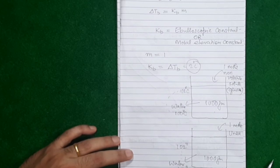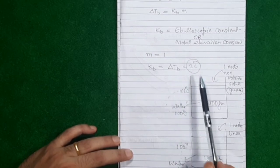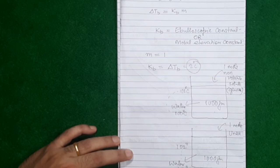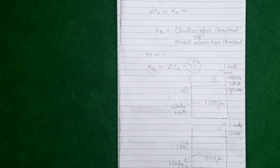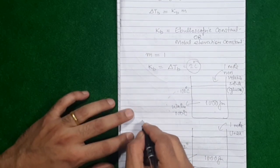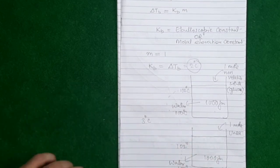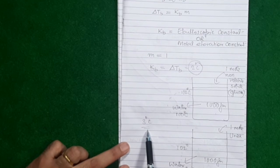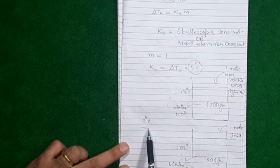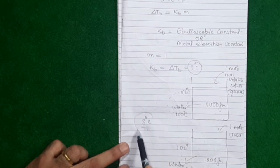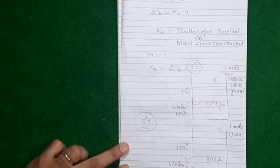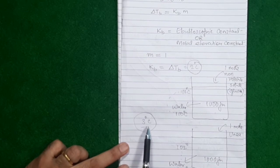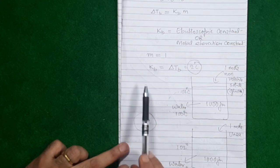For example, what is the ebullioscopic constant of water? It is the increase in boiling point of water when you add 1 mole of solute — when you prepare a solution of water of molality 1 — whatever amount the boiling point of water rises, that rise is a fixed value. And that fixed value is called the ebullioscopic constant of water. Similarly, if the ebullioscopic constant of benzene is, say, 3 degrees Celsius, it means preparing a solution of benzene of molality 1 will always raise benzene's boiling point by 3 degrees.